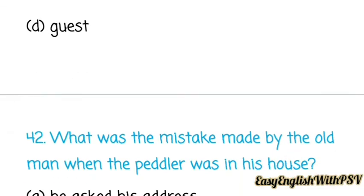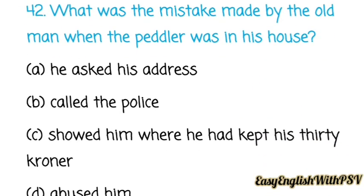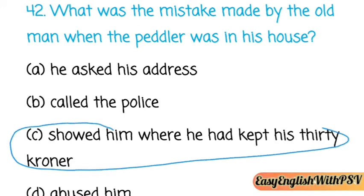Last question, number forty-two: What was the mistake made by the old man when the peddler was in his house — he asked his address, called the police, showed him where he had kept his thirty kroners, or abused him? The correct answer is: he showed him where he had kept his thirty kroners.